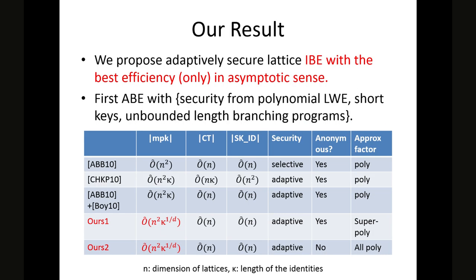This is a summary of our results. In our work, we proposed Adaptively Secure Lattice-Based IBE with the best efficiency in the asymptotic sense. I remark that our scheme is not efficient in practical parameters — it is efficient only in the asymptotic sense. As a side result, I also proposed a first ABE with certain properties, but I will not explain this in the presentation.